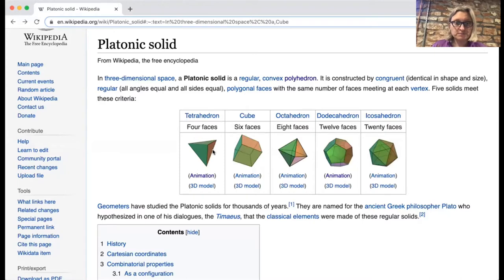We've got the tetrahedron, four vertices, four faces. We've got the cube, that's got eight vertices, six faces. Octahedron has eight faces. The dodecahedron has 12 faces. The icosahedron has 20 faces. The dodecahedron, all the faces are regular pentagons, and the icosahedron, the faces are all regular triangles.